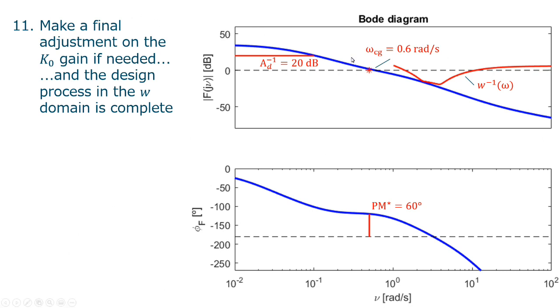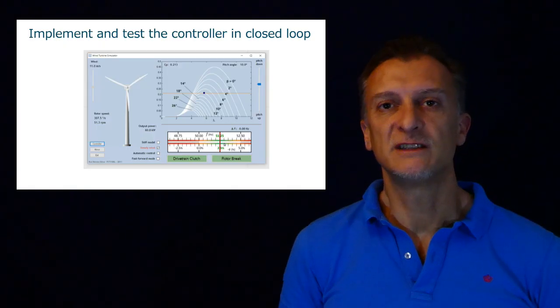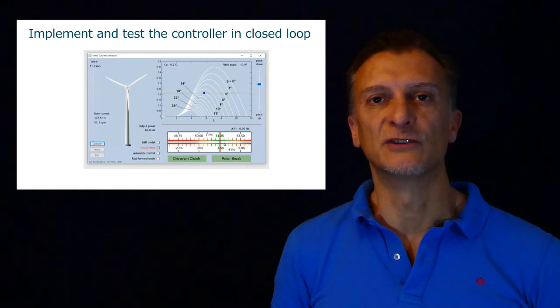So we made a little adjustment. And now we are complying with all four elements. We apply the bilinear transformation and compute the controller in the Z domain. Finally, we just need to implement and test the controller on the real plant.